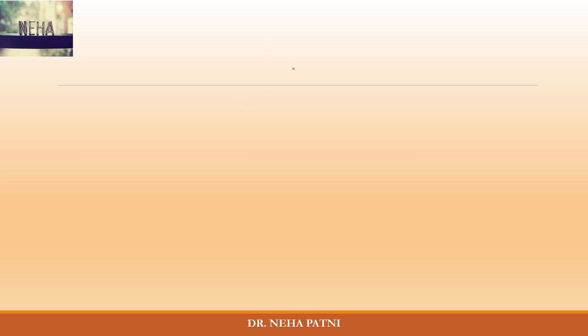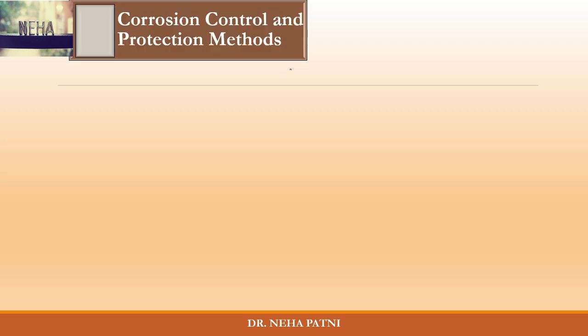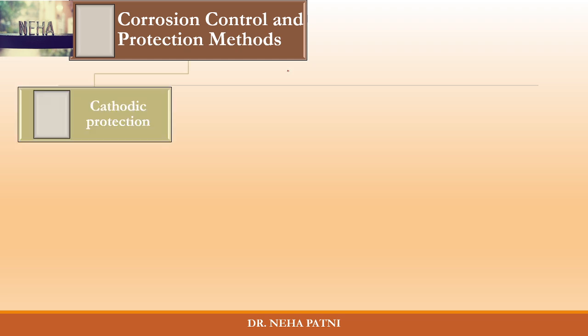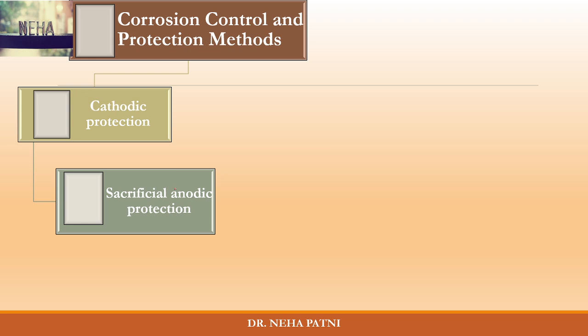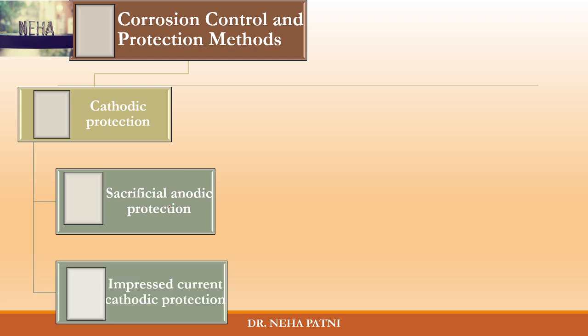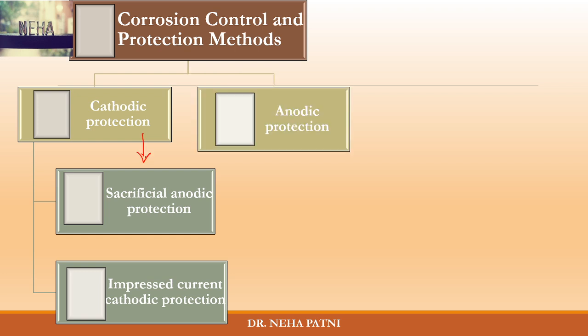Hello guys, in the series of corrosion, I am ready today with one of the methods of protection of corrosion. We were discussing many methods to control and prevent corrosion. What I'm going to discuss today would be cathodic protection, anodic protection — sacrificial anodic protection and impressed current cathodic protection are two subdivisions of cathodic protection — and another method is anodic protection.